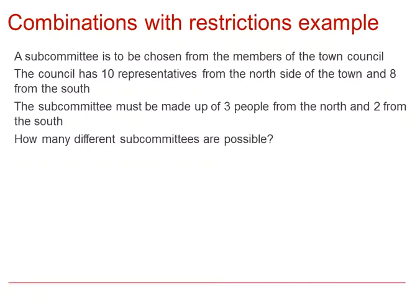Let's look at a second example of combinations with restrictions. A subcommittee is to be chosen from the members of the town council. The council has ten representatives from the north side of the town and eight from the south. Let's think about this in two sections and then multiply.